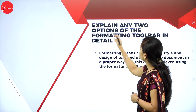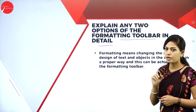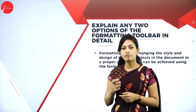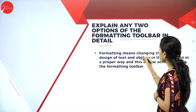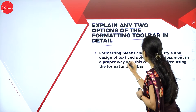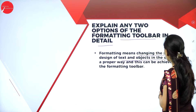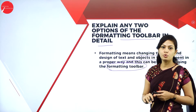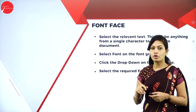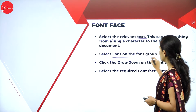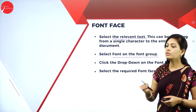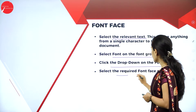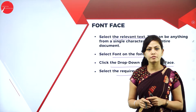Next: explain any two options of the formatting toolbar in detail — three marks question. For formatting text and documents, we have many options: bold, italic, underline, change font size, font style, font color, alignment, etc. Formatting means changing the style and design of text and objects in the document. This is achieved using the formatting toolbar. For font face, select the text, go to the Font group, click the drop-down on the font face, and select the required font face name.